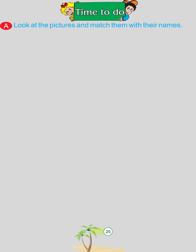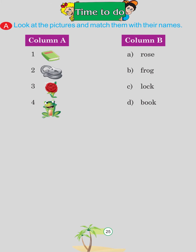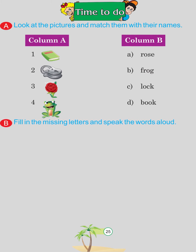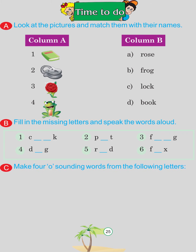Time to do. Look at the pictures and match them with their names — Column A, Column B: Book, Lock, Rose, Frog. Fill in the missing letters and speak the words aloud: Cook, Pot, Frog, Dog, Rod, Fox. Make four O-sounding words from the following letters.